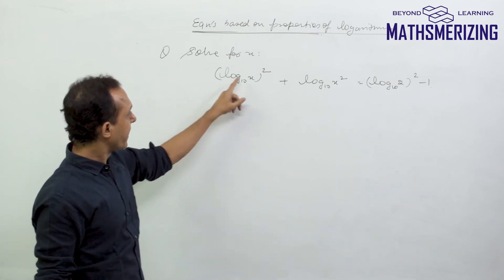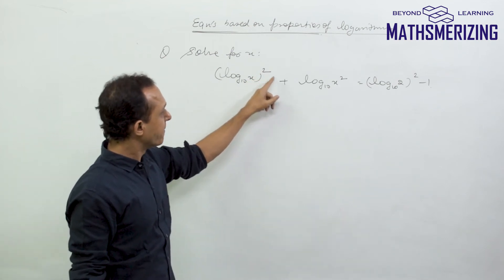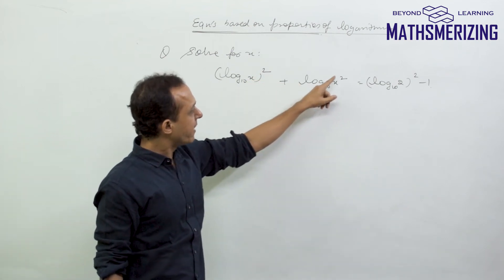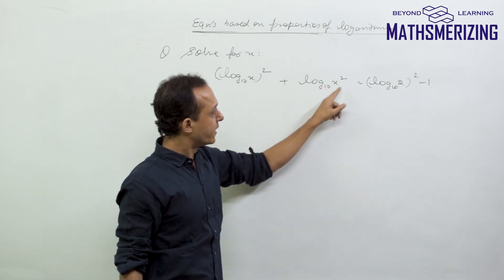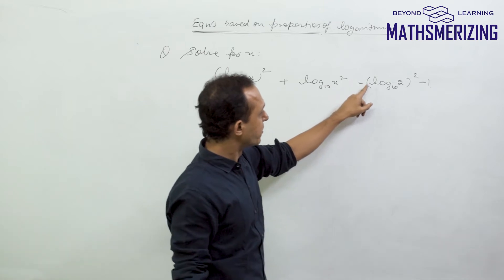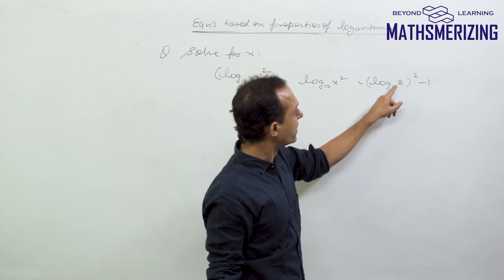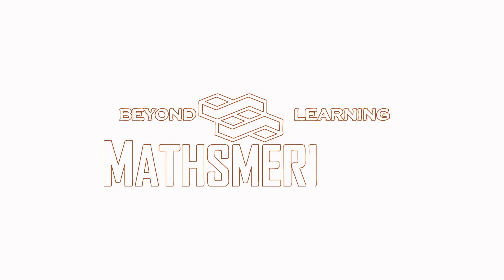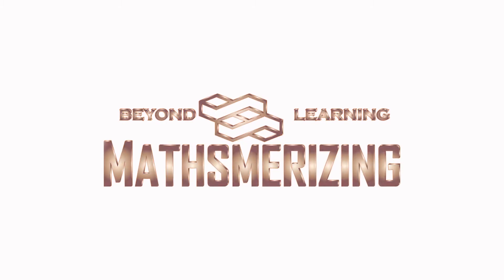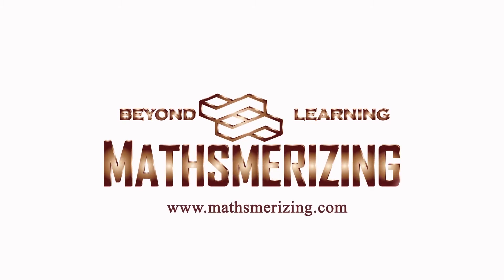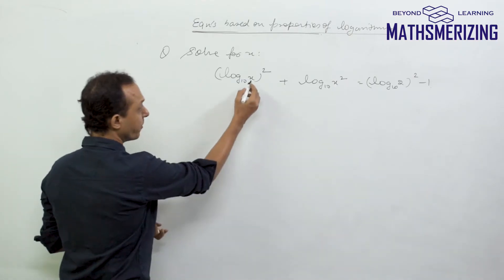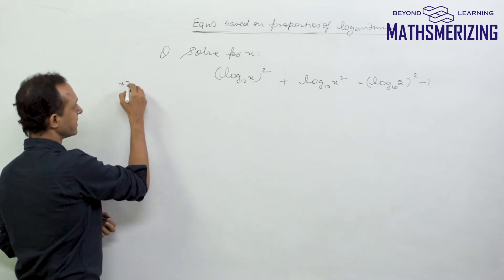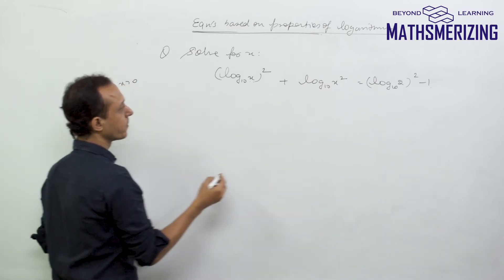The question is: log x (base 10) squared plus log x² (base 10), and this equals log 2 (base 10) whole square minus 1. Clearly, the domain of this function is x greater than 0.